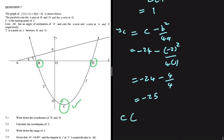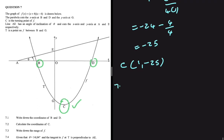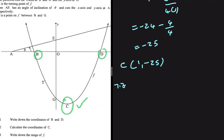So the coordinates of C are (1, -25). Let's go ahead and do 7.3: find the range of f. f is concave up, so the range is given by y ≥ y at the turning point. We know the y-value at the turning point is -25, so the range is y ≥ -25. Just like that, we've answered 7.3.